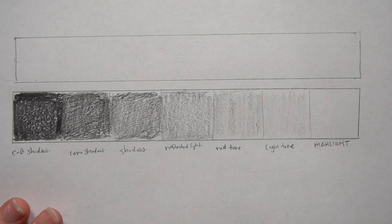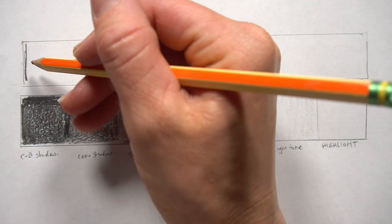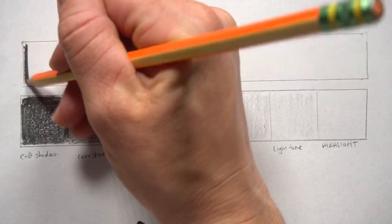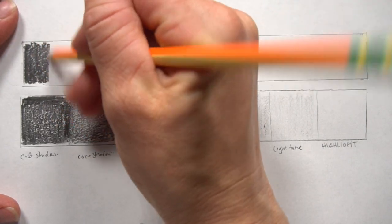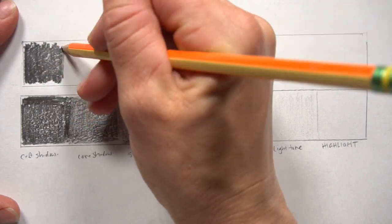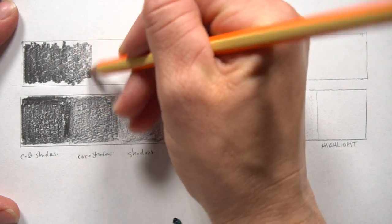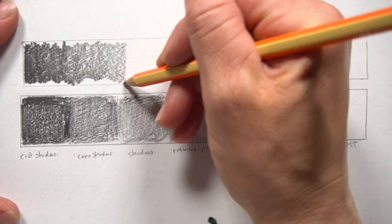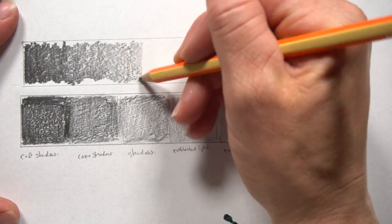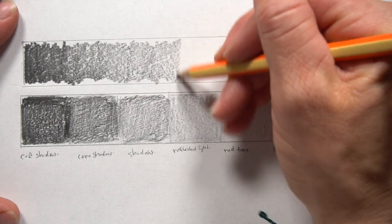So now we're going to be pressing our hardest on this side. So just press down as hard as you can. We're still in that cast shadow. And then we're moving into the core shadow. So we're just loosening up just a little bit. But I'm still pressing hard. And then in shadow, I'm just easing up the pressure just a little bit. But I am still pressing.